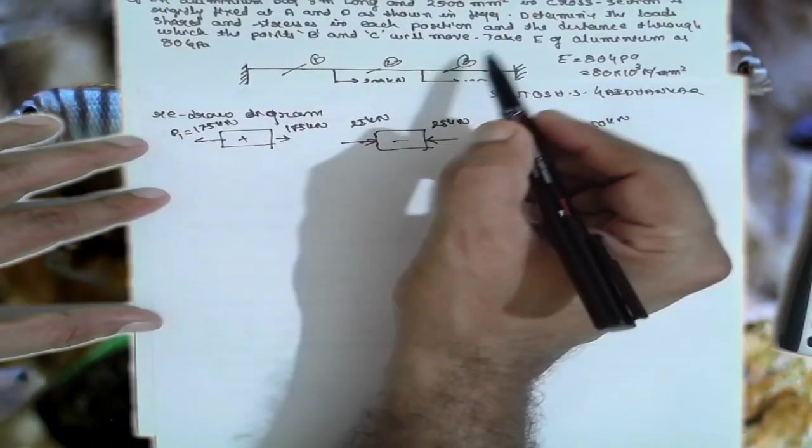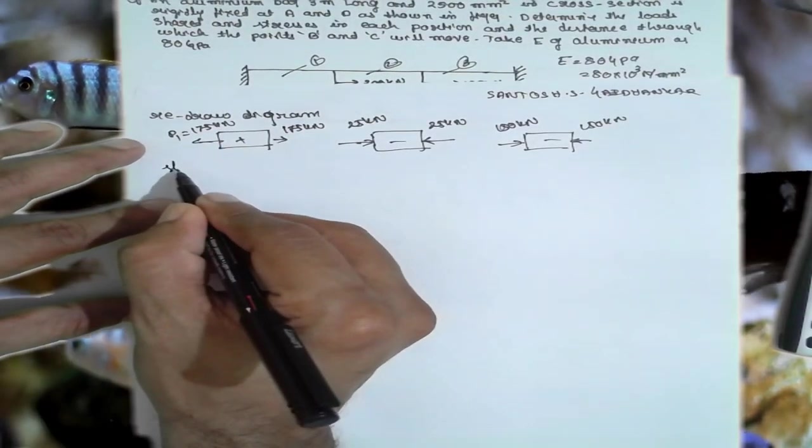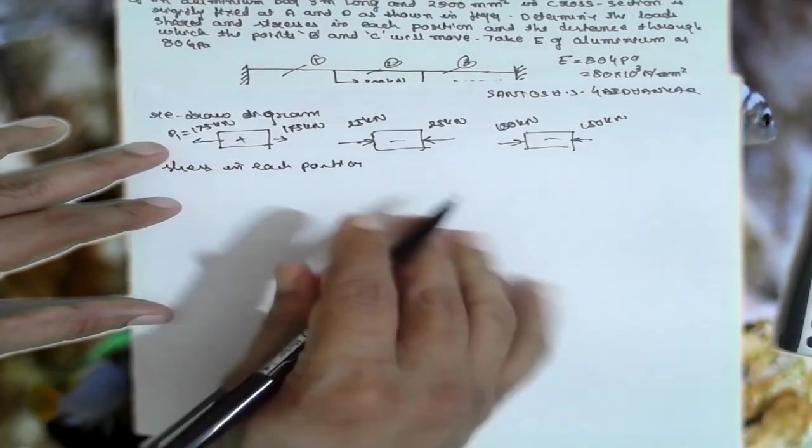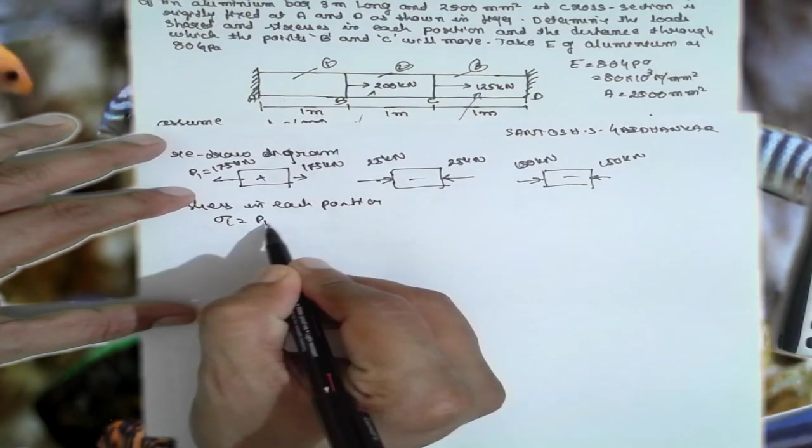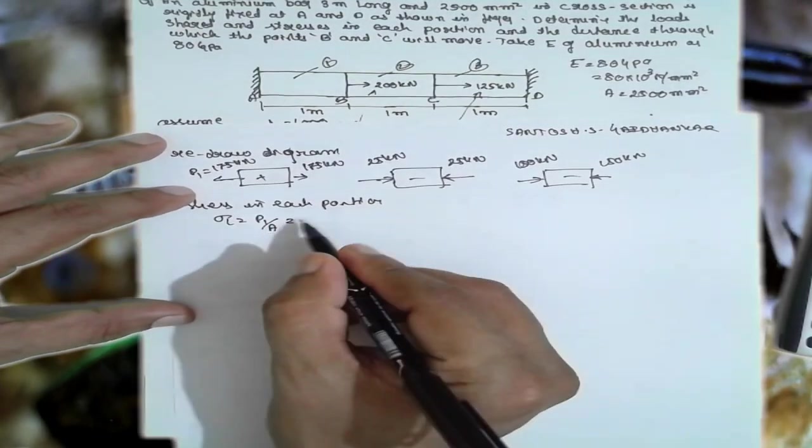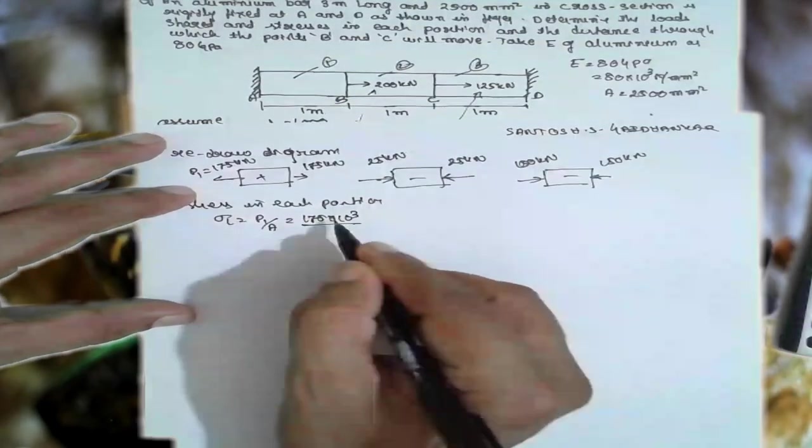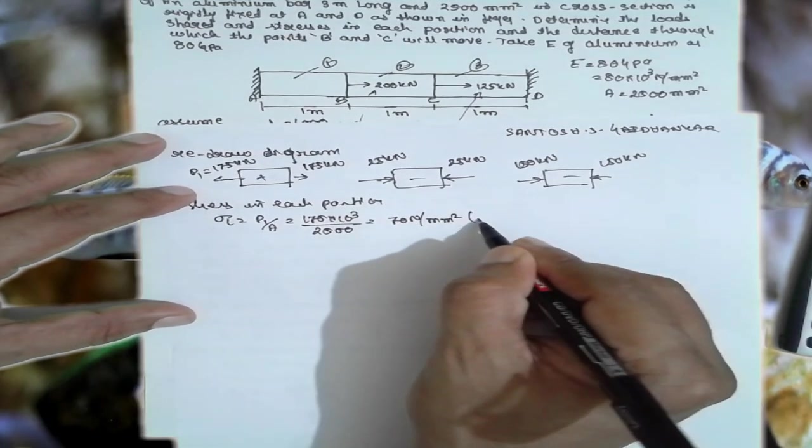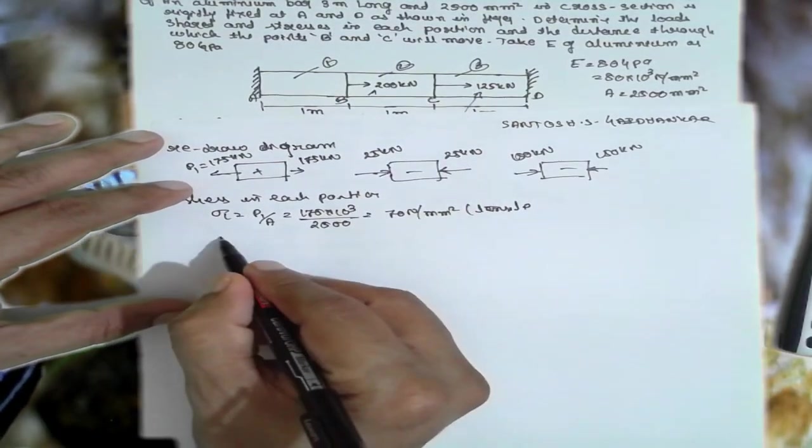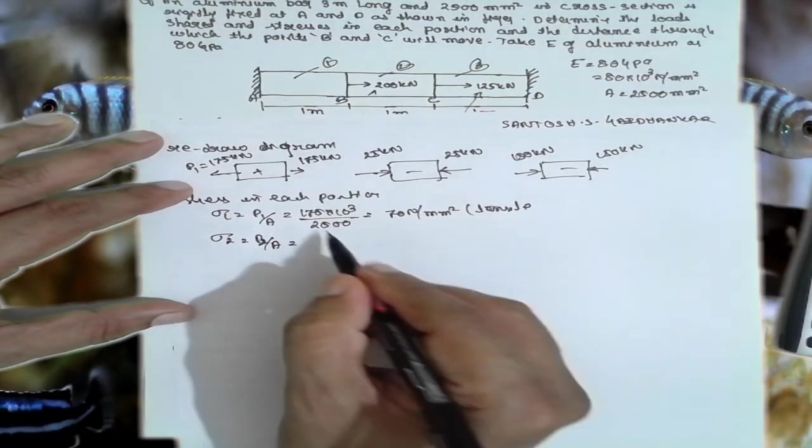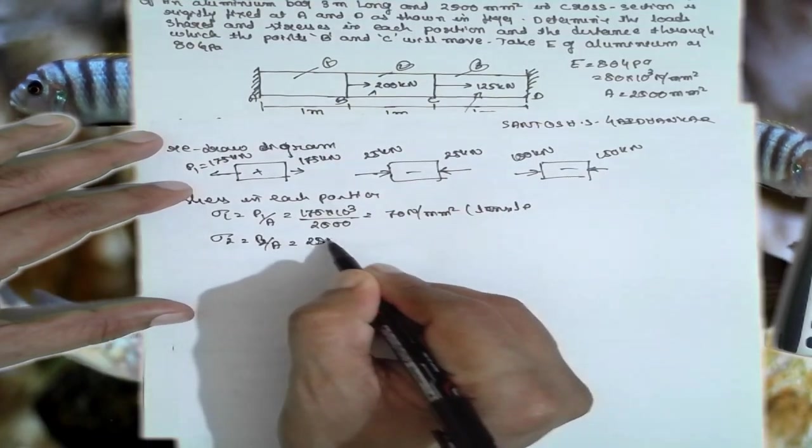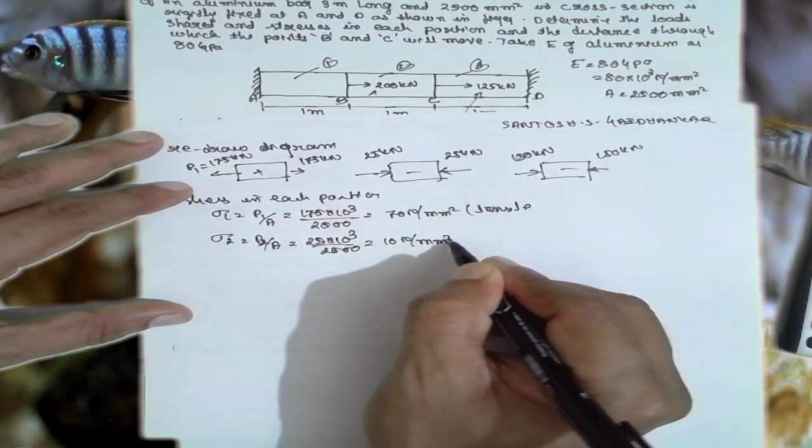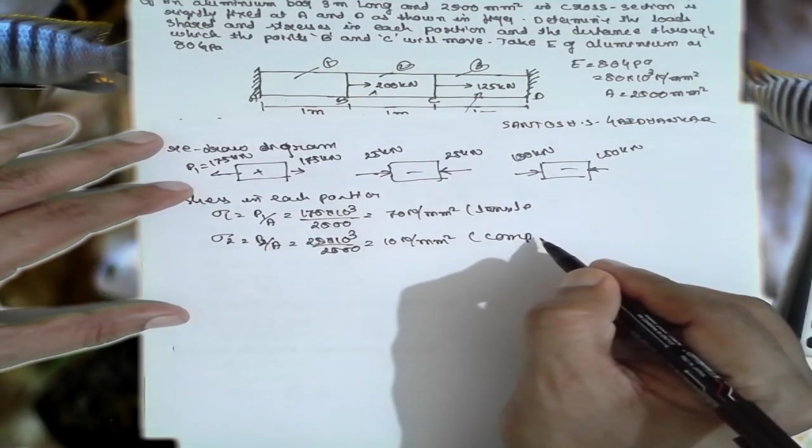Now, we are finding the stresses in each section. Stresses in each portion or each section. First section: consider σ₁ = P1/area. What is P1? 175×10³. Area will be 2500. Answer will be 70 N/mm². It is tensile. σ₂ = P2/area. P2 is how much? 25×10³ divided by 2500. The answer will be 10 N/mm². It is compressive force.